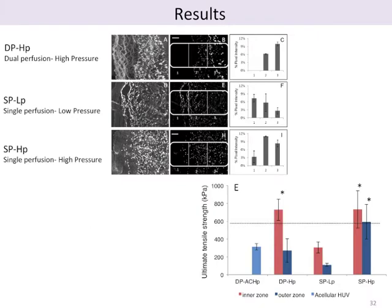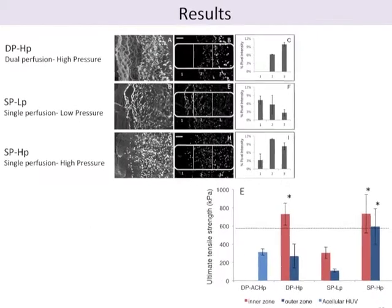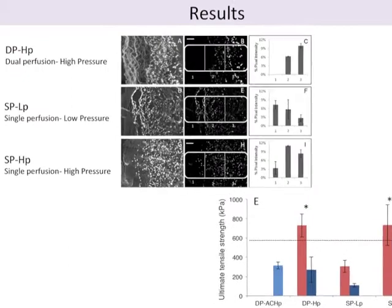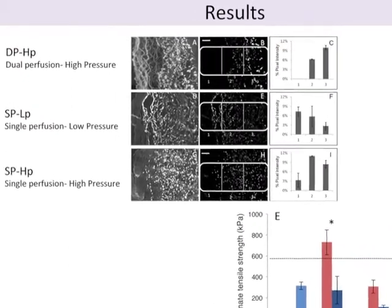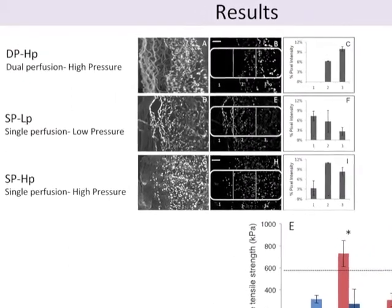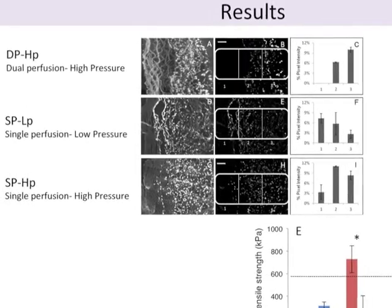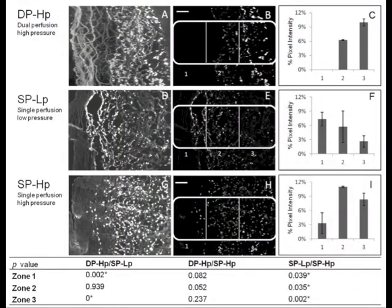Constructs cultured under dual perfusion at relative pressure displayed higher concentration of cells located in the mid to outer layers of the scaffold adjacent to the seed surface. Conversely, the low pressure single perfusion circuit created a more aggressive nutrient gradient due to medium perfused through the lumen only and reduced transmural flow relative to the higher pressure systems.